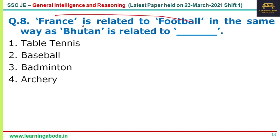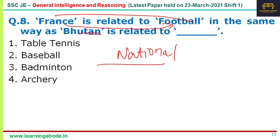Question 8 is a meaning-based analogy question. France is related to football — the same way Bhutan is related to what? This is essentially a general awareness question about national sports. The national game of France is football, and the national game of Bhutan is archery. Answer option 4 is the answer for question 8.